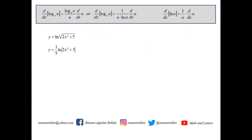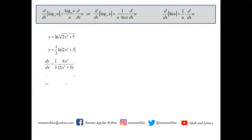Differentiating y equals one-third ln(2x³ + 5), we copy the one-third, differentiate 2x³ + 5 to get 6x², and place 2x³ + 5 in the denominator. So dy/dx equals one-third times 6x² all over 2x³ + 5. Simplifying one-third times 6x² gives 2x², so dy/dx equals 2x² over (2x³ + 5).